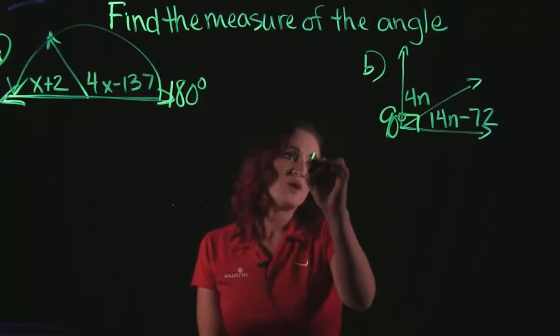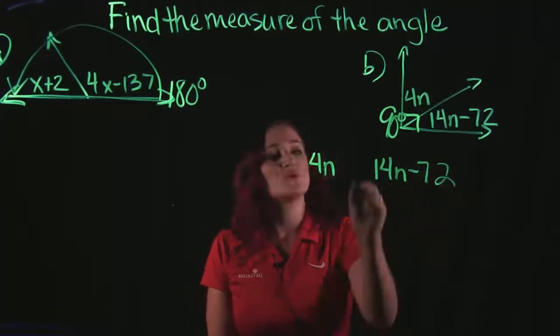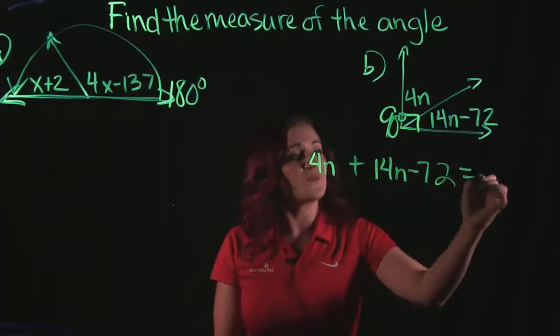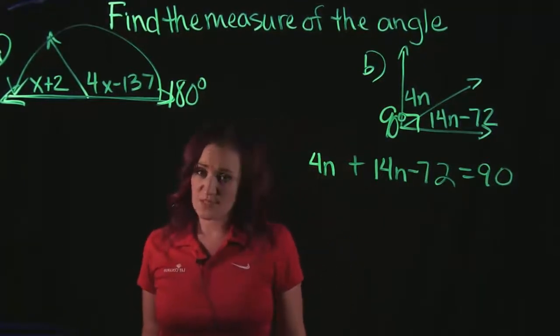So we have angle 1, which is 4n. We have angle 2, which is 14n minus 72. So we should be able to add up these two angles, set them equal to 90, and solve this problem.